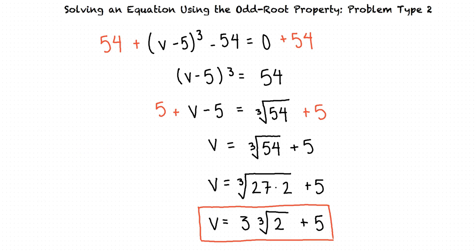Okay, so to solve an equation using the odd root property, we first isolate the cubed expression. We then take the cube root of both sides and isolate the variable. Finally, we simplify the cube root if possible. That's exactly right. Great work!